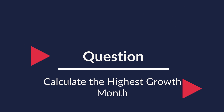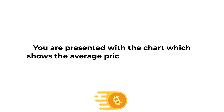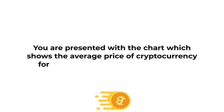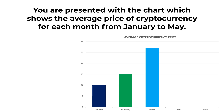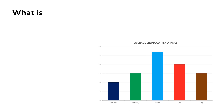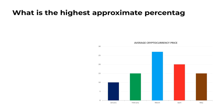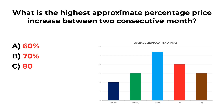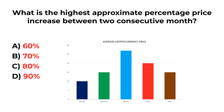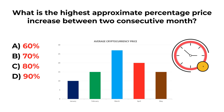Here's a cool question which tests your knowledge of percentages. You're presented with a chart showing the average cryptocurrency price for each month from January to May. The question is: what is the highest approximate percentage price increase between two consecutive months? You have four choices: A) 60%, B) 70%, C) 80%, and D) 90%. Give yourself 10 to 30 seconds to figure it out.